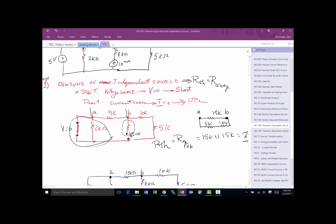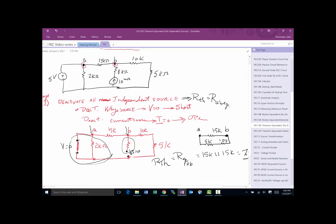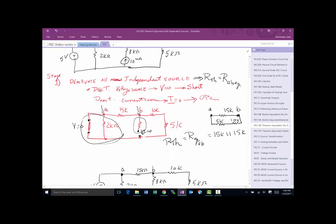Okay. So notice we found R_TH. So in order for us to be able to do a model, what do we have to do? All I have to do is I'll have to find V open circuit. Once I find the V open circuit, I am done.